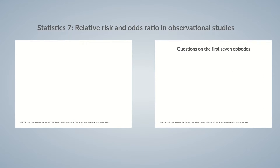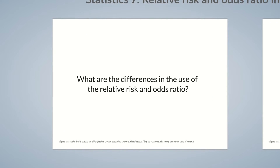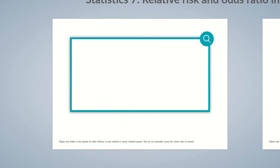Relative Risk and Odds Ratio in Observational Studies. Do you know the difference when it comes to using the relative risk and odds ratio in observational studies? That's the focus of this Chalk Talk episode. Differentiating between the relative risk and odds ratio is especially important in the two primary types of observational studies, namely cohort studies and case-control studies. Let's take a detailed look at these study types.